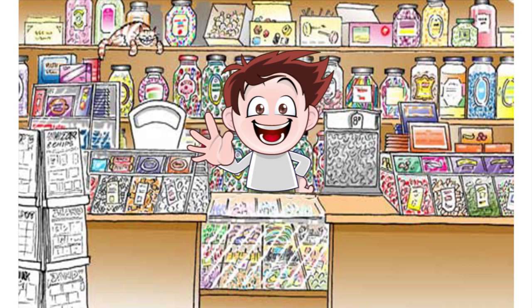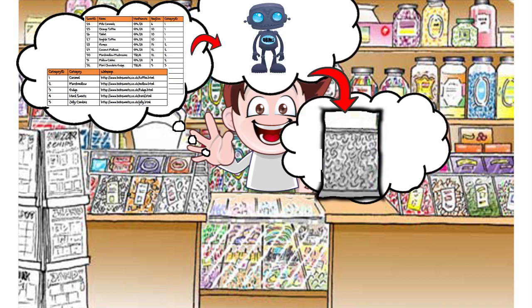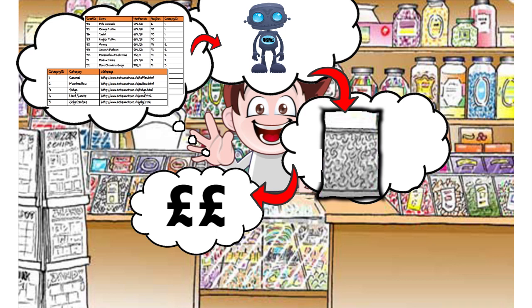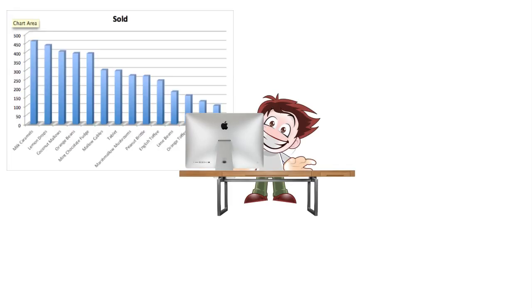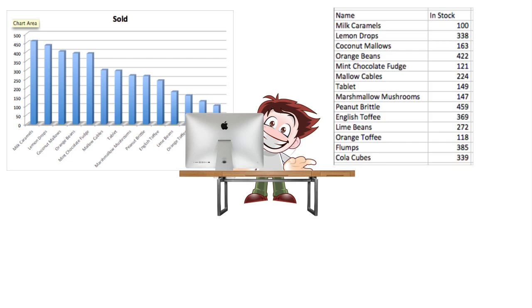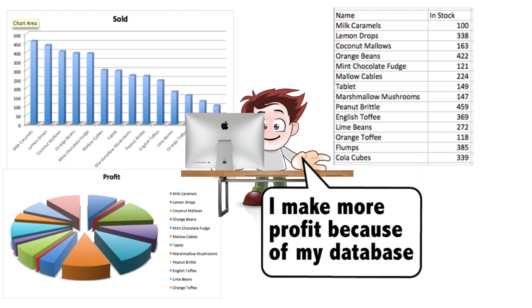Bob is really happy with his database of linked tables. He has linked it to the till in his shop so that when he sells some sweets it gets updated automatically. This means he can see which sweets are the most popular, which sweets he needs to restock, and which sweets make the most profit. Bob's database helps make his business better.